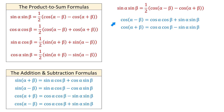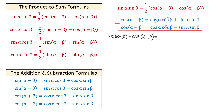So here we have both of them, and in the next step, we will subtract them. First, we will subtract the left sides, and we will have cosine of alpha minus beta minus cosine of alpha plus beta. And now, on the right side, cosine of alpha cosine of beta will cancel, and we will have sine of alpha sine of beta minus negative, which is plus sine of alpha sine of beta.